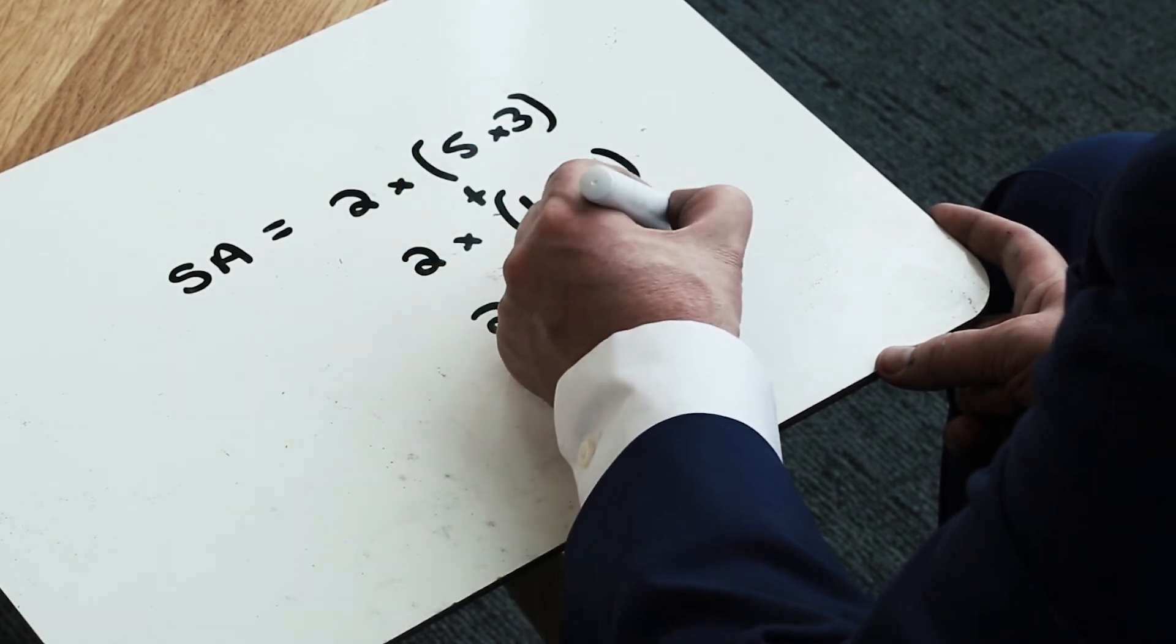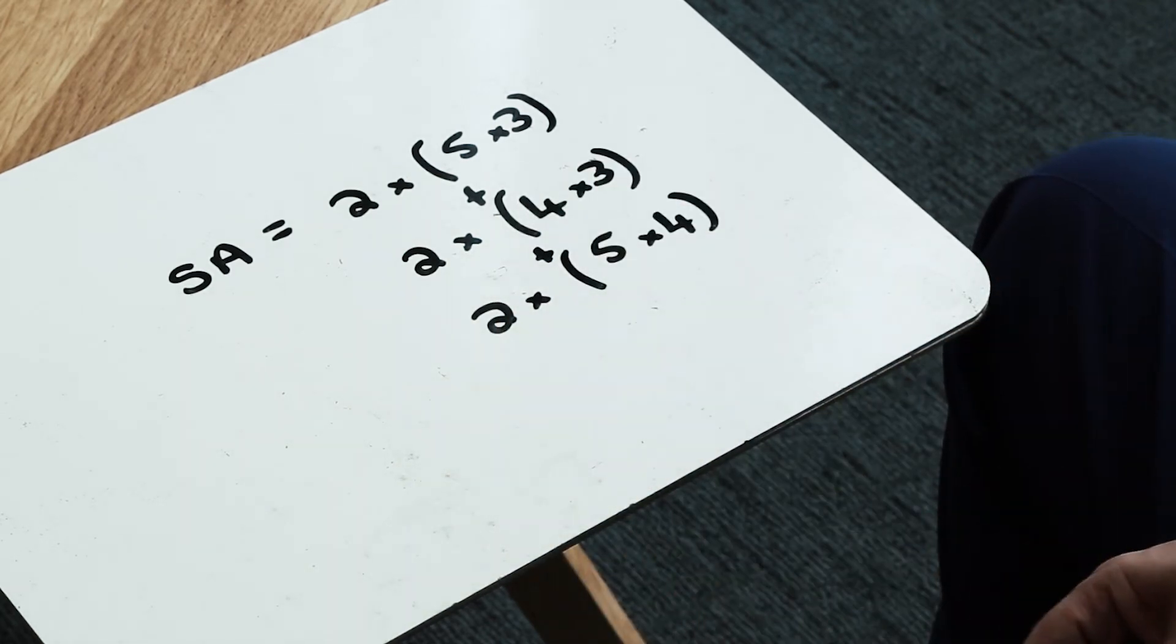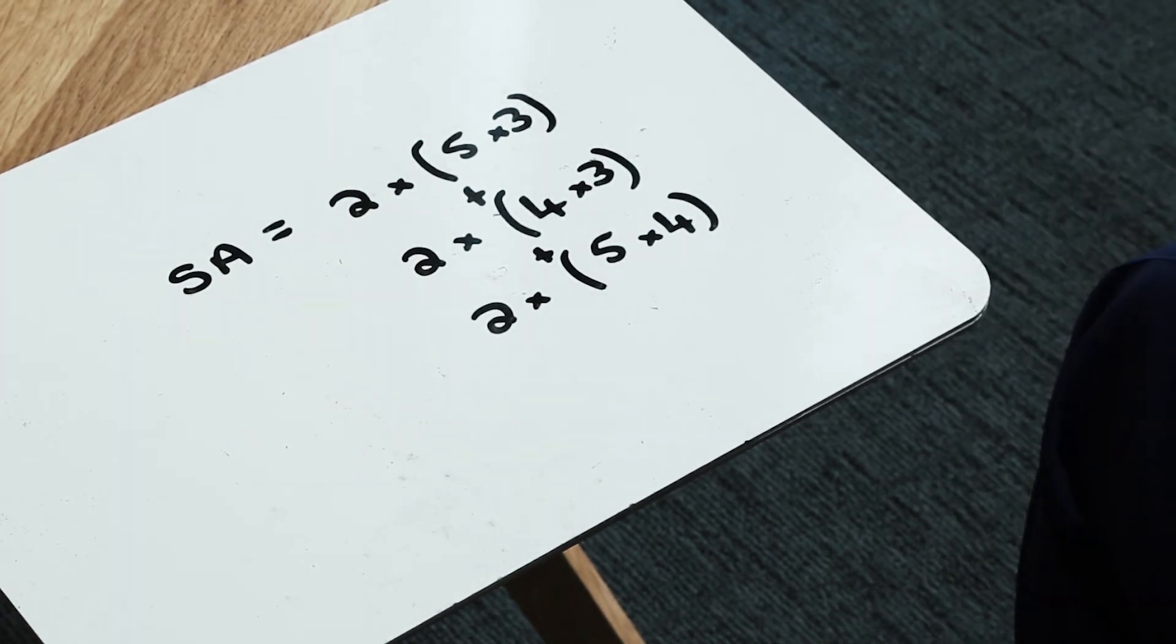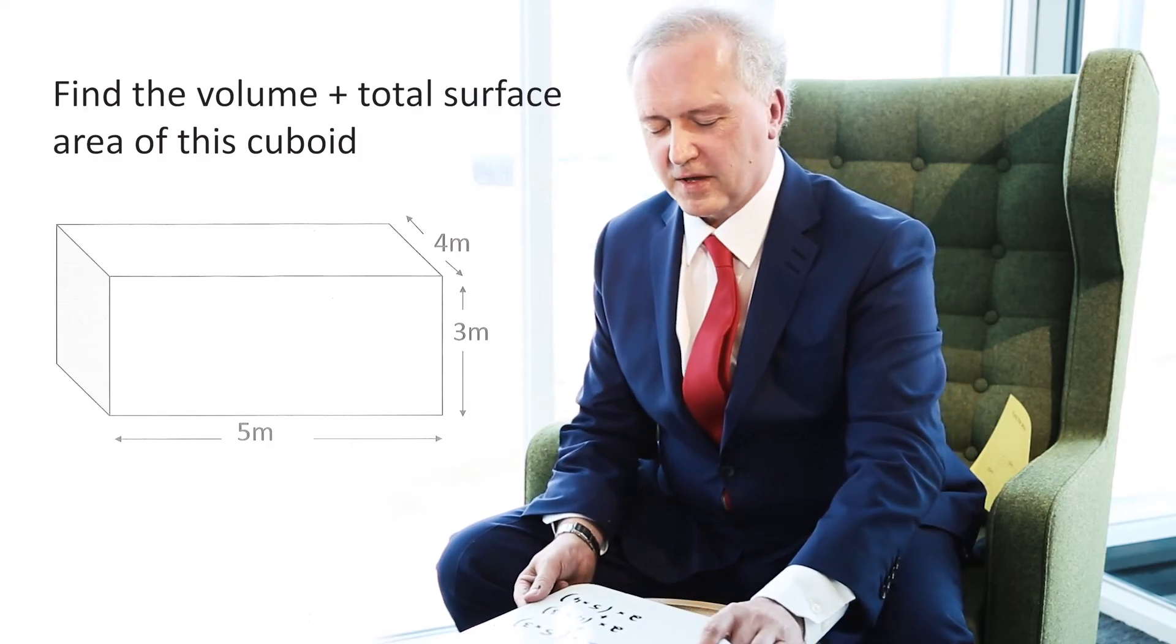And I'm looking at this diagram here and I'm thinking actually I need a 5 by 4. So I then pop 5 by 4 into my equation there. And I picked up some invariable method marks along the way.